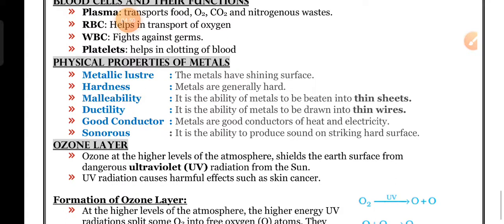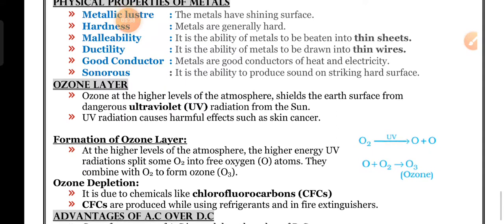Physical properties of metals. First one is metallic lustre - the metals have shiny surface. Hardness - metals are generally hard. Malleability - it is the ability of metals to be beaten into thin sheets. Ductility - it is the ability of metals to be drawn into thin wires. Good conductor - metals are good conductors of heat and electricity. Sonorous - it is the ability to produce a sound on striking a hard surface. These are the important properties of metals.